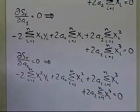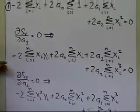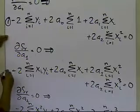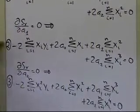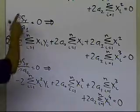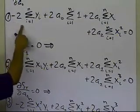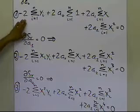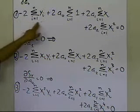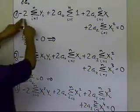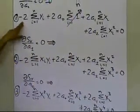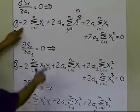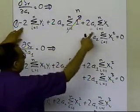So what you're basically getting is three equations: your first equation, your second equation, and your third equation. Now, looking at these three equations, I need to take the known quantities to the right-hand side. I'll be able to take certain terms to the right-hand side because those are the known quantities. Also, for example, the summation of 1 from i equals 1 to n is simply n. The unknowns a0, a1, and a2 will stay on the left-hand side.